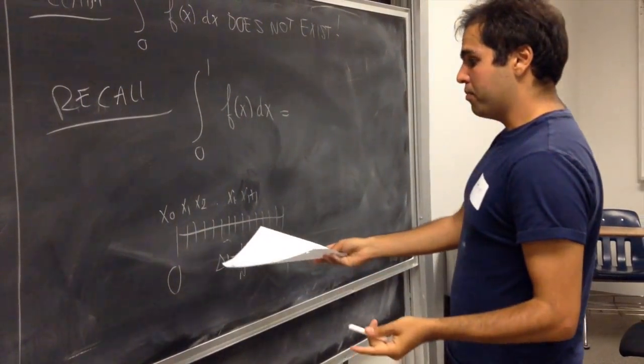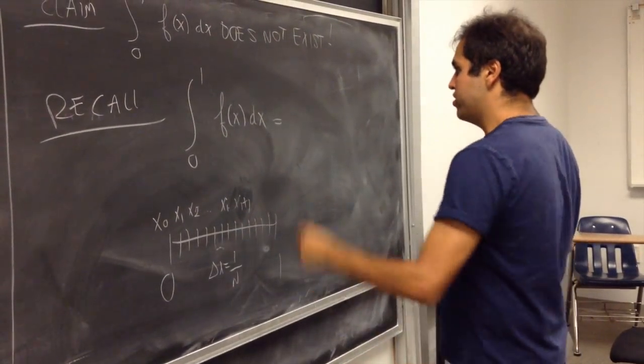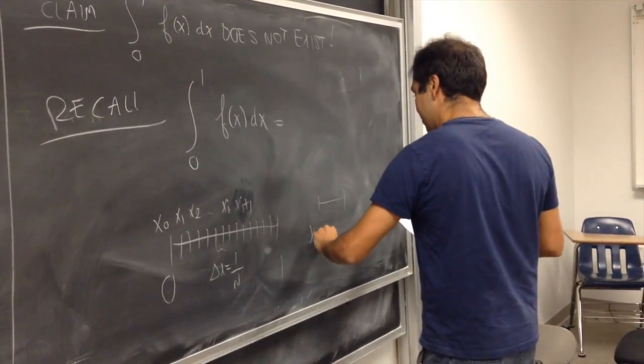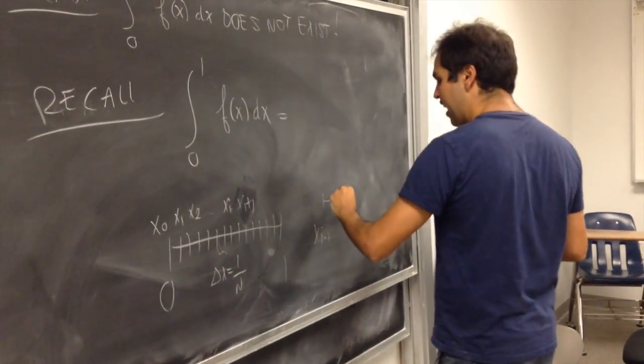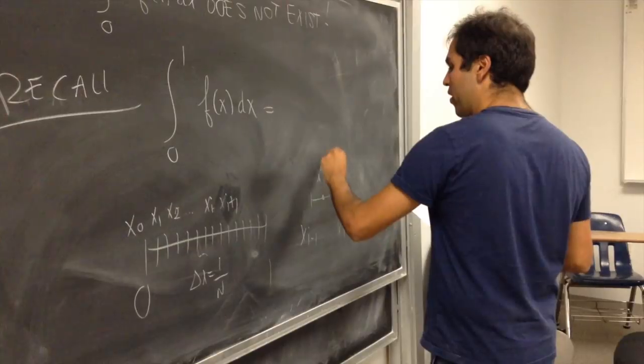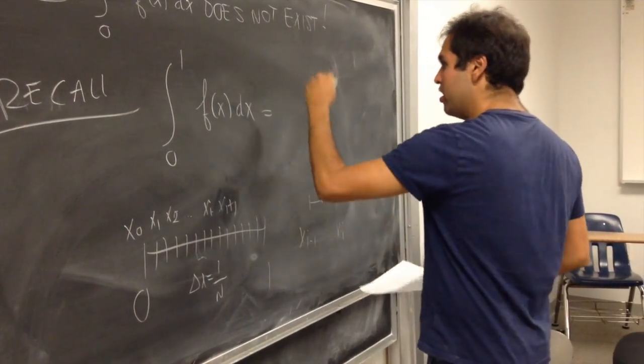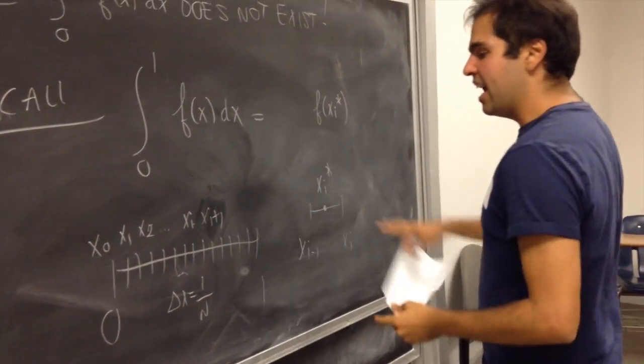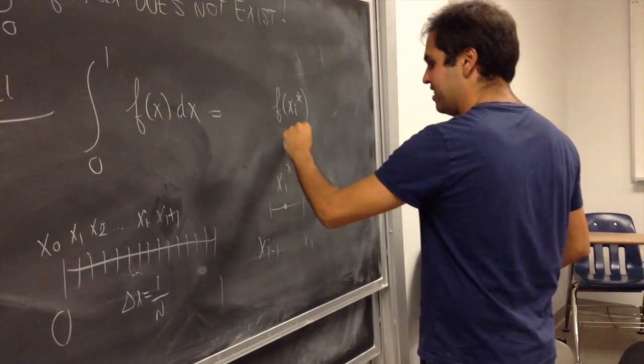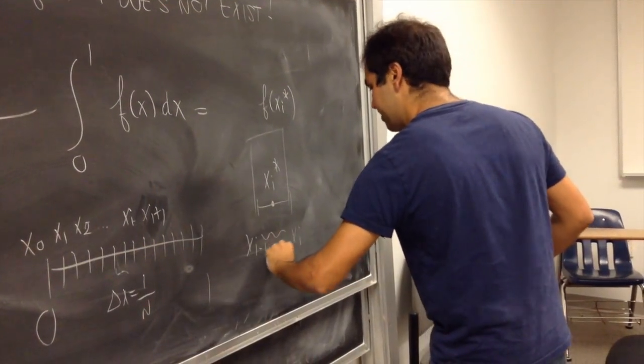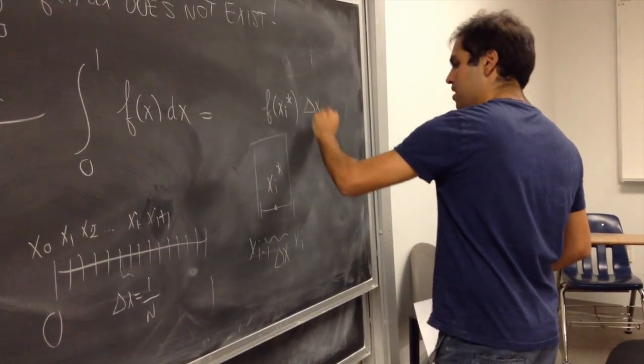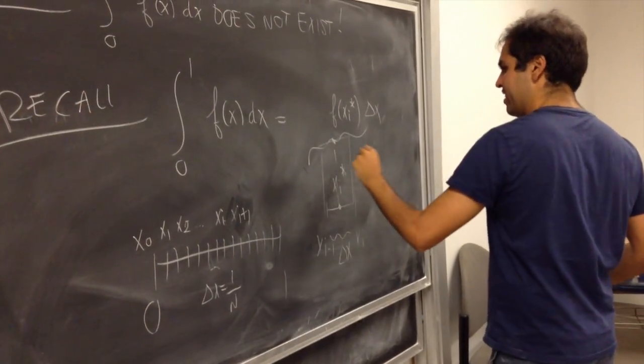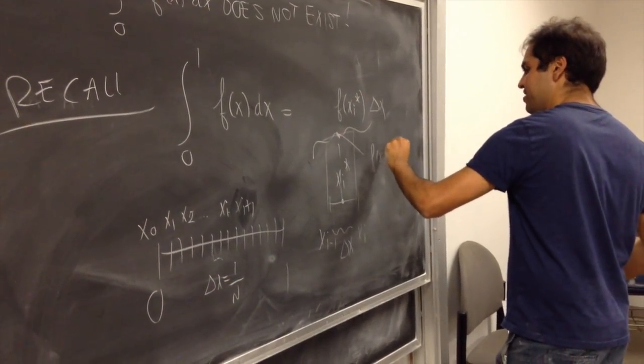And the integral is just to be defined as follows. Each interval, xi minus 1 to xi, you pick a random point xi star, and you consider the rectangle of height f of xi star and a width delta x.